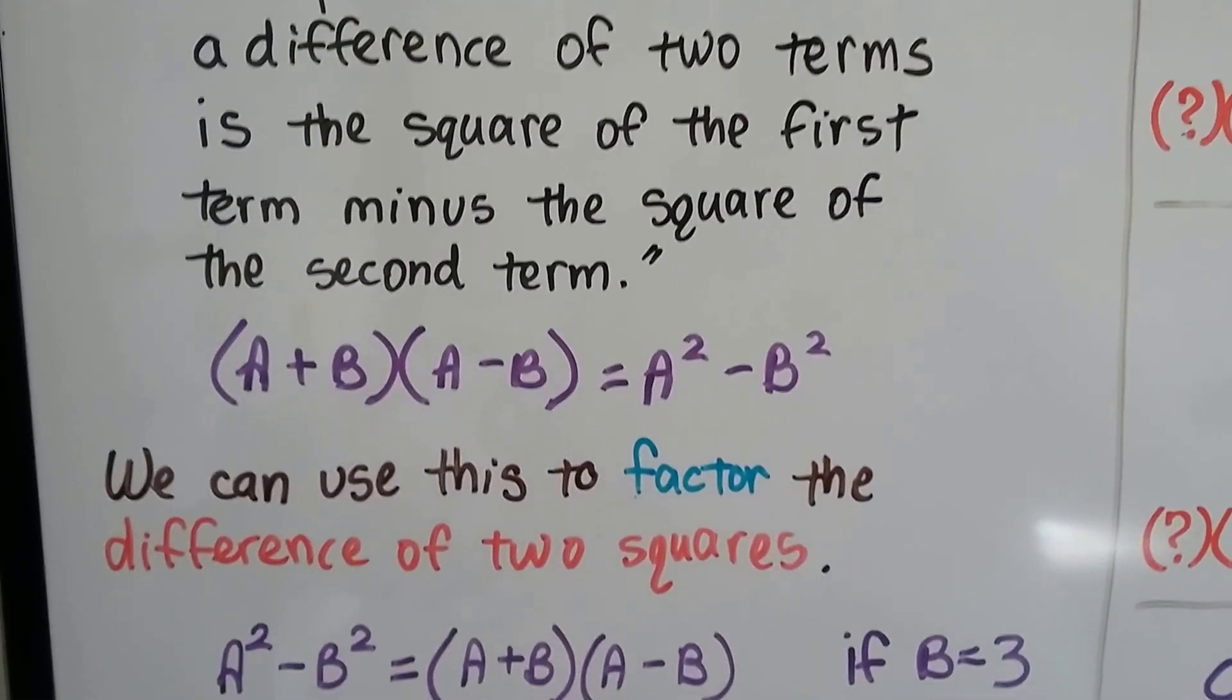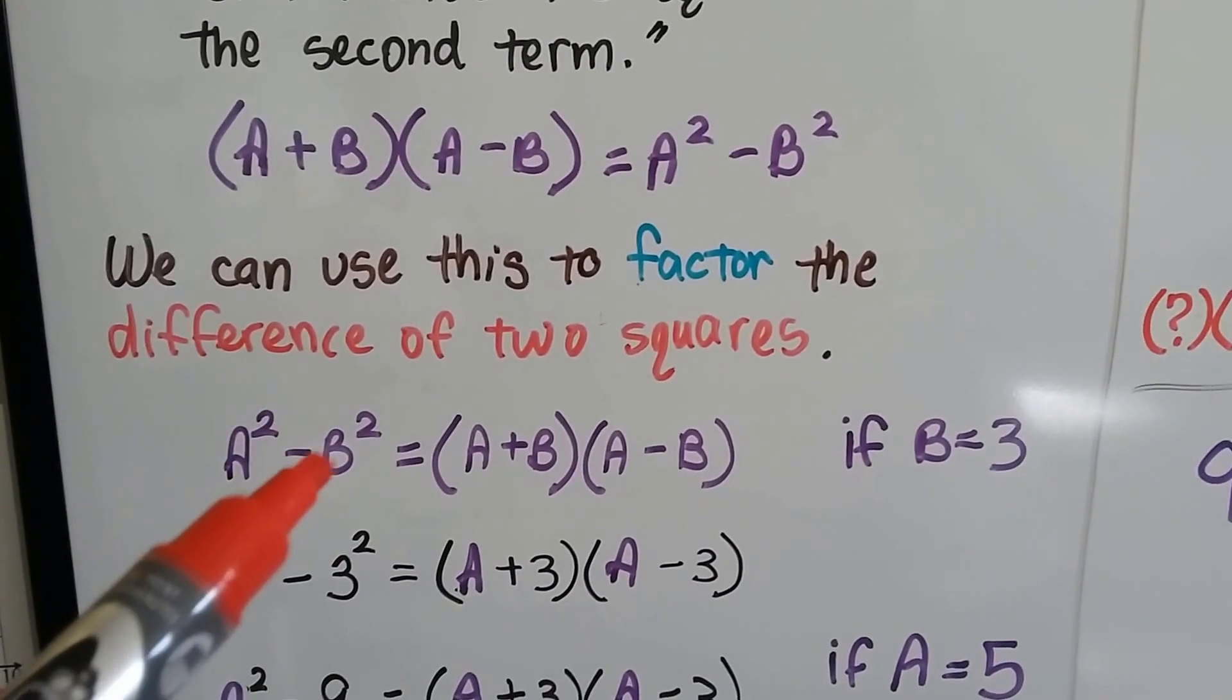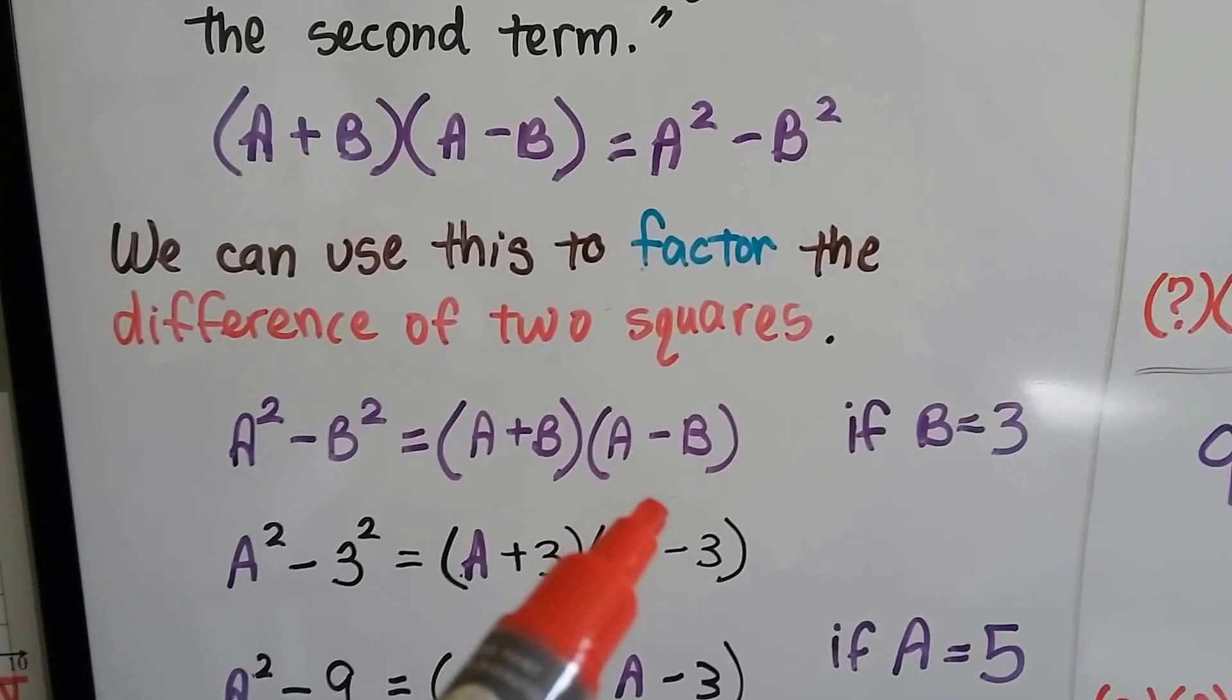We can use this to factor the difference of two squares. Turn it around. a² minus b² equals, it opened up, as (a+b)(a-b).